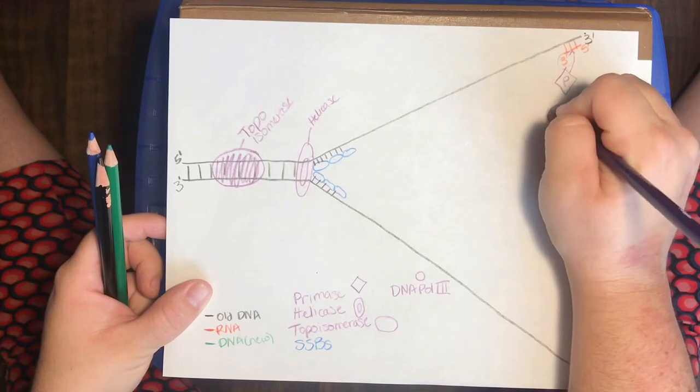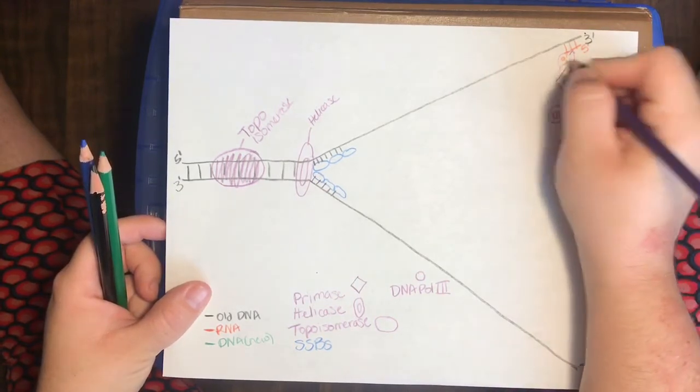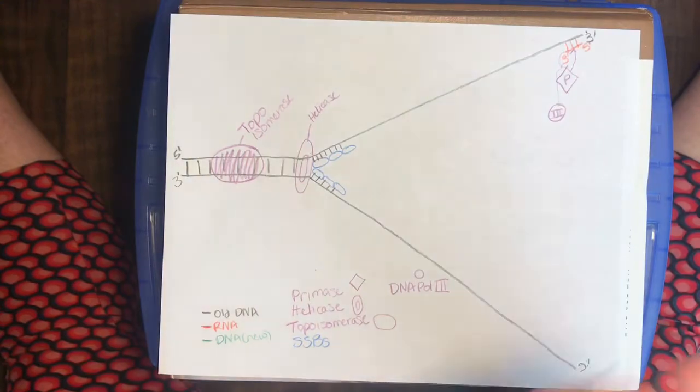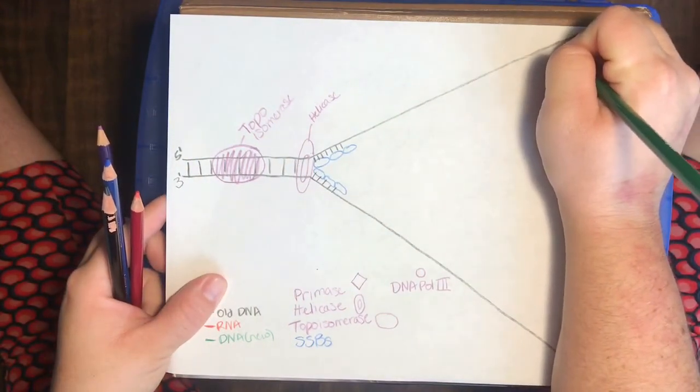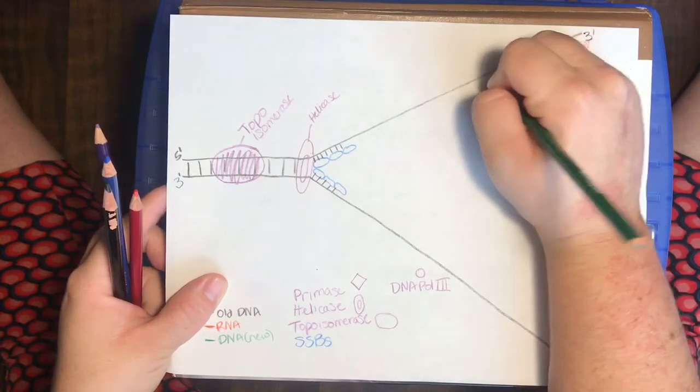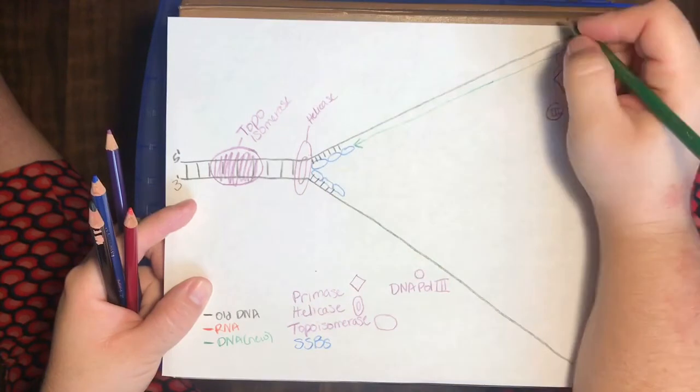DNA polymerase 3 is going to come in here and recognize this 3' hydroxyl group, and it's going to start laying down DNA from this 3' end. So, it's bound right here, and it's going to keep going as far as it can until it runs into the fork. And, in fact, it's never actually going to catch up to the fork because the fork is always opening more and more and more.